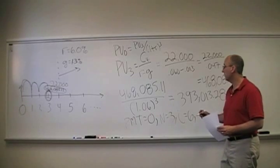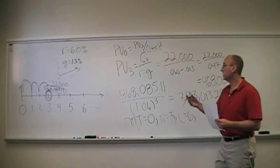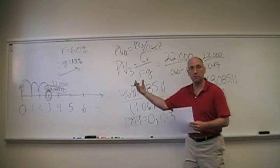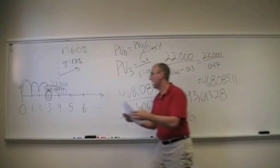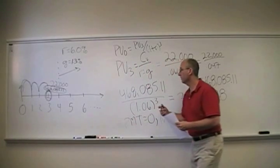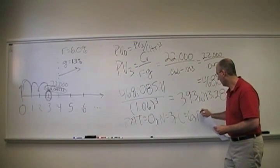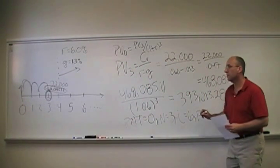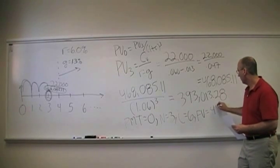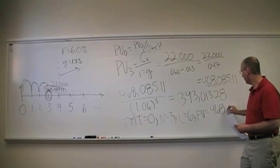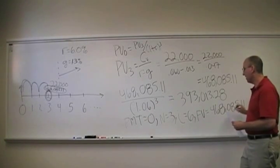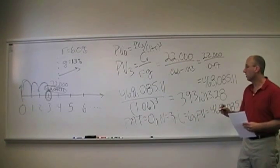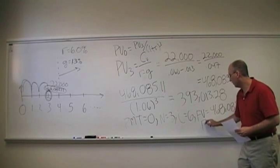FV is the future value, which is, in this case, the value as of time three. Remember, it's the value at the end of our timeline. FV is equal to 468,085.11.